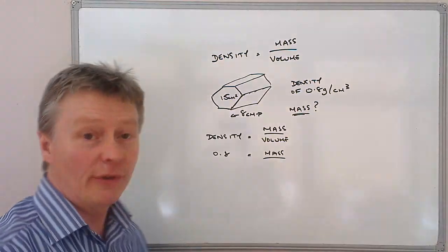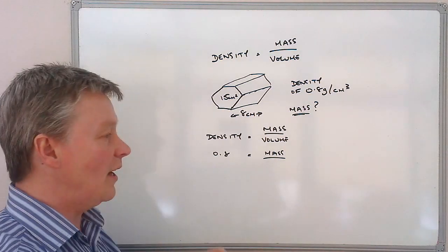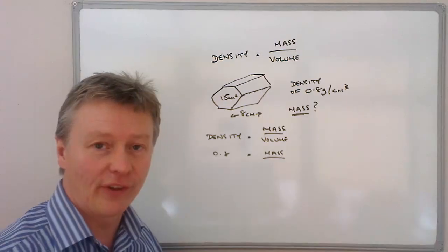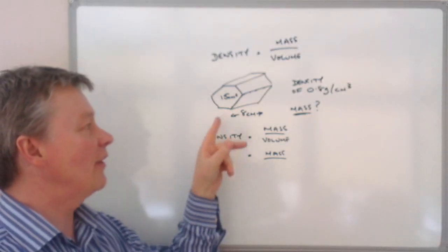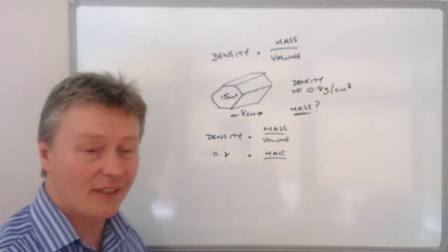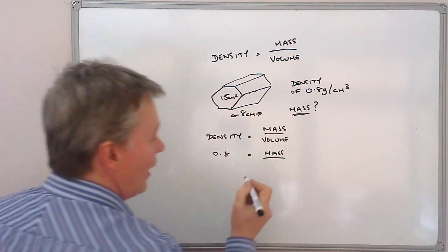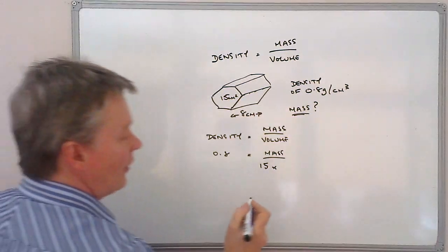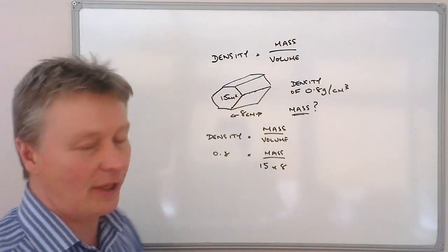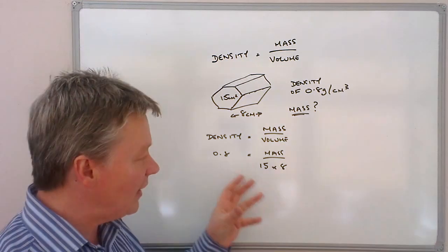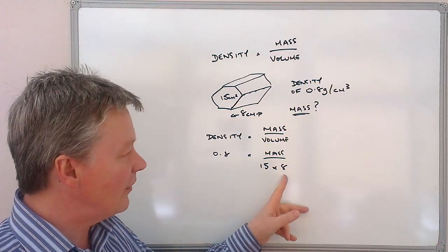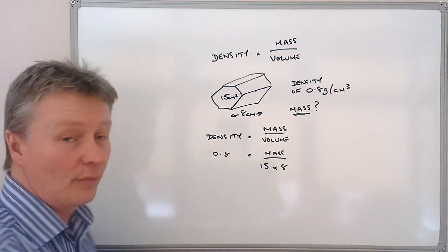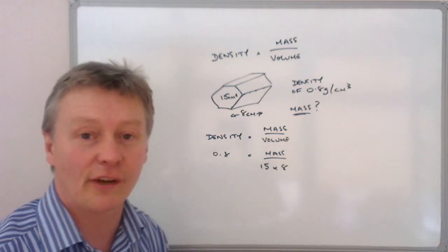Now volume, volume of any product is this particular area. So it's the area or length times breadth which is this area multiplied by the height. So we've been given this area as 15 centimeters squared and we're going to multiply that by the height which is 8 centimeters. So in other words what I can do now is calculate this and then we're going to put mass on one side and numbers on the other in order to calculate our final answer.